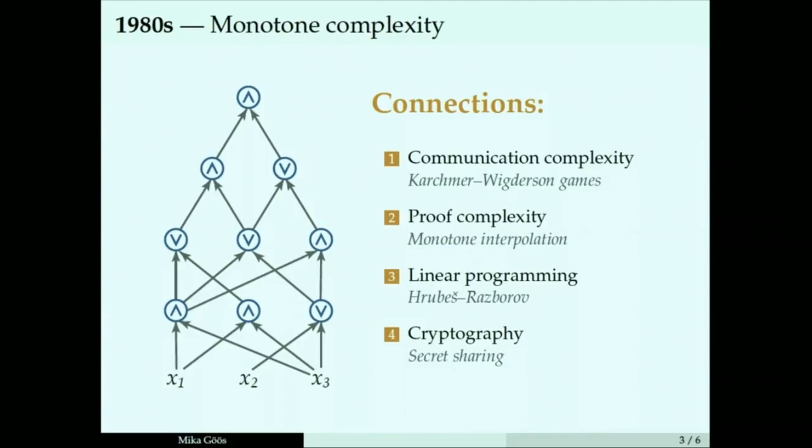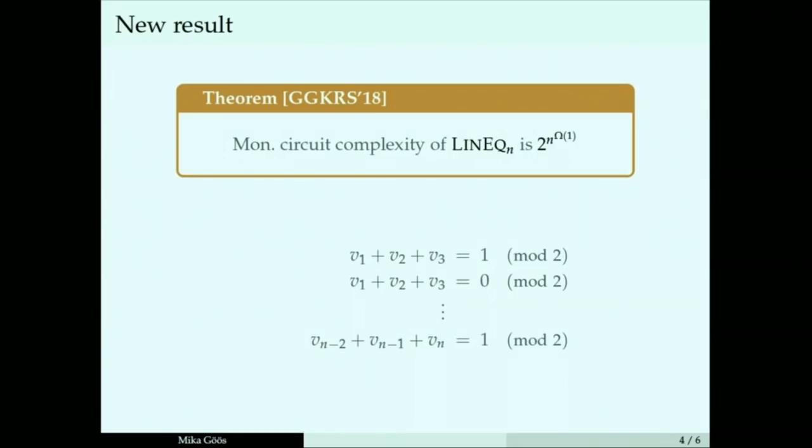I'll tell you today about a new result we have in monotone complexity. It's a new monotone circuit lower bound for a function that's really simple. It's just solving systems of linear equations. Gaussian elimination can do it efficiently, but we show monotone circuits can't. You need exponential-sized monotone circuits to do this. It really pinpoints the limitation of this model.